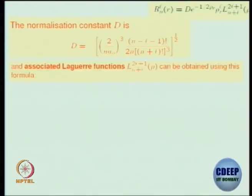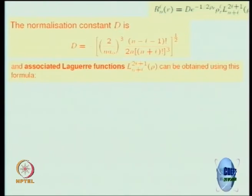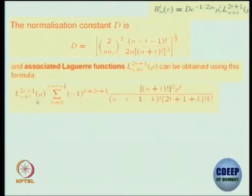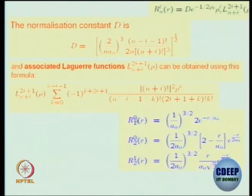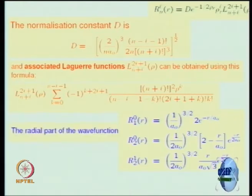These normalizations are worked out already, so for simple cases — maybe for n equal to 1 or n equal to 2 and L equal to 1 — you can verify what is happening. There is an equal-to sign which is missing here; this is a neat summation formula for the associated Laguerre functions. You can try to substitute and verify that you get R_{1,0} and R_{2,0}. This is the radial part of the wave function for the hydrogen atom problem.